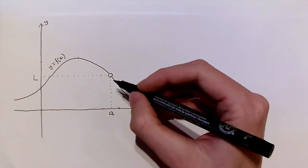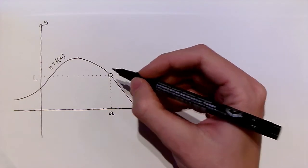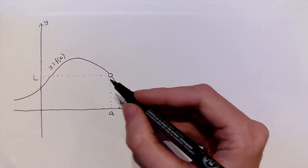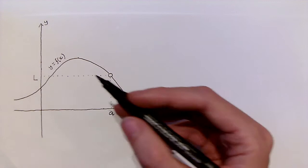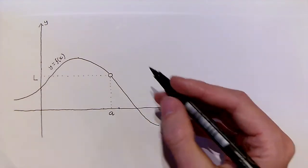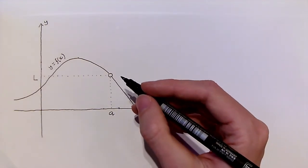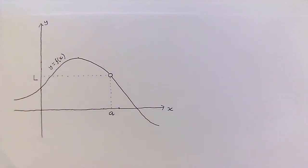Note that as x gets close to a, maybe over here or over here, f(x) gets close to this value l. So what would it mean to say that the limit of this function, as x approaches a, is equal to l? Well, we need to look back at our definition.